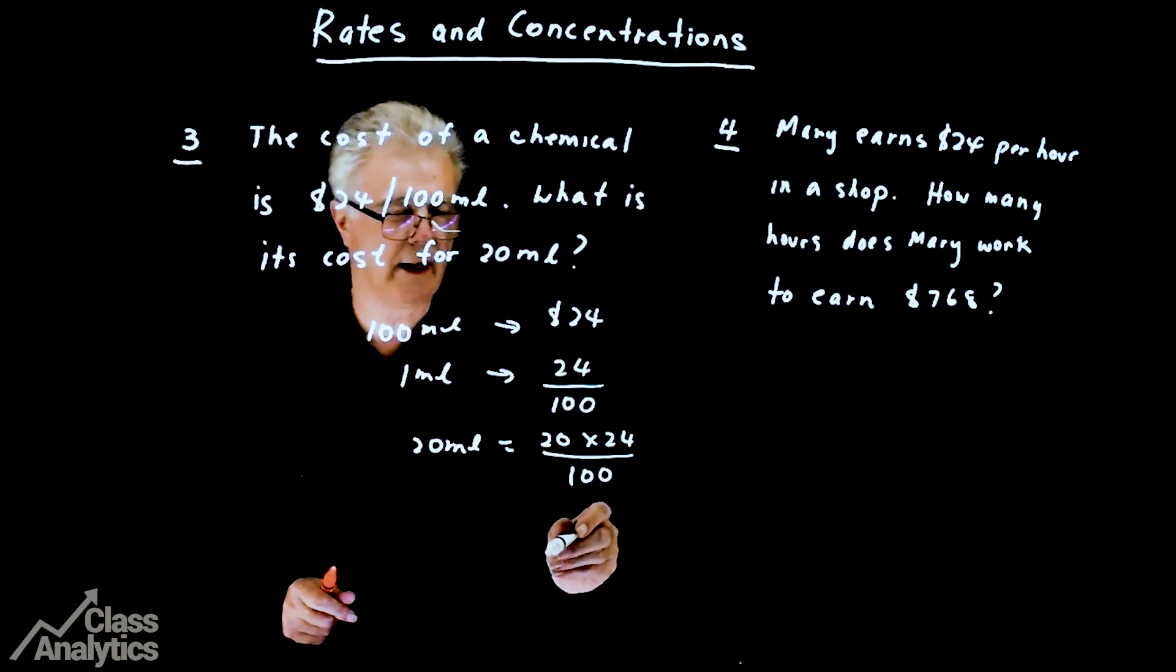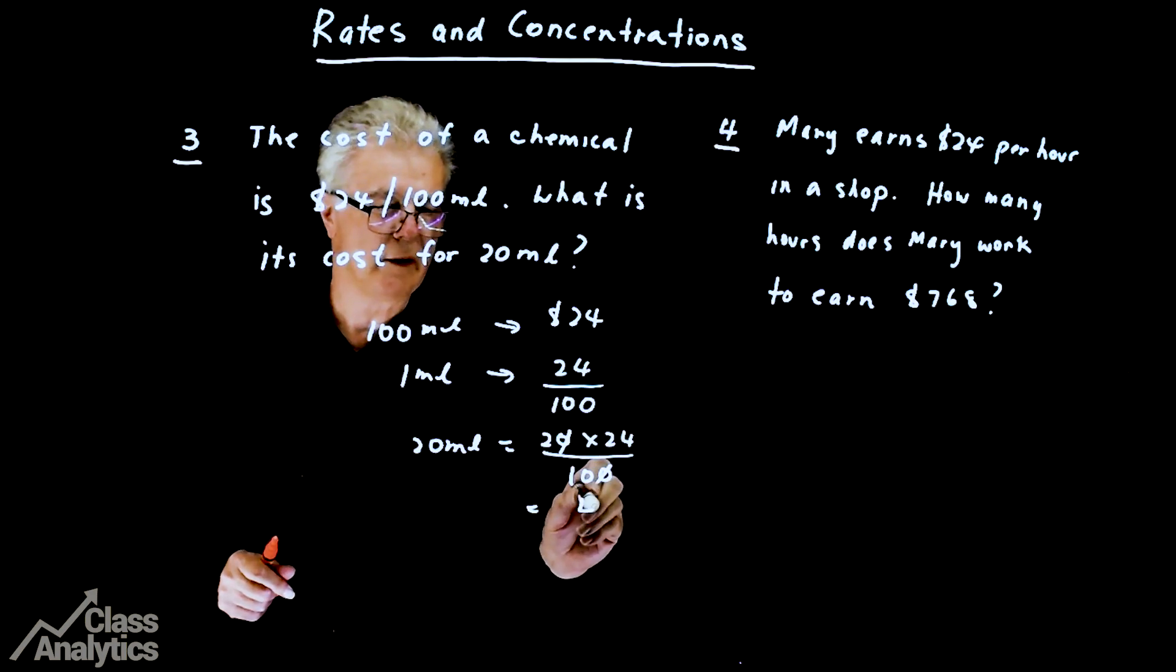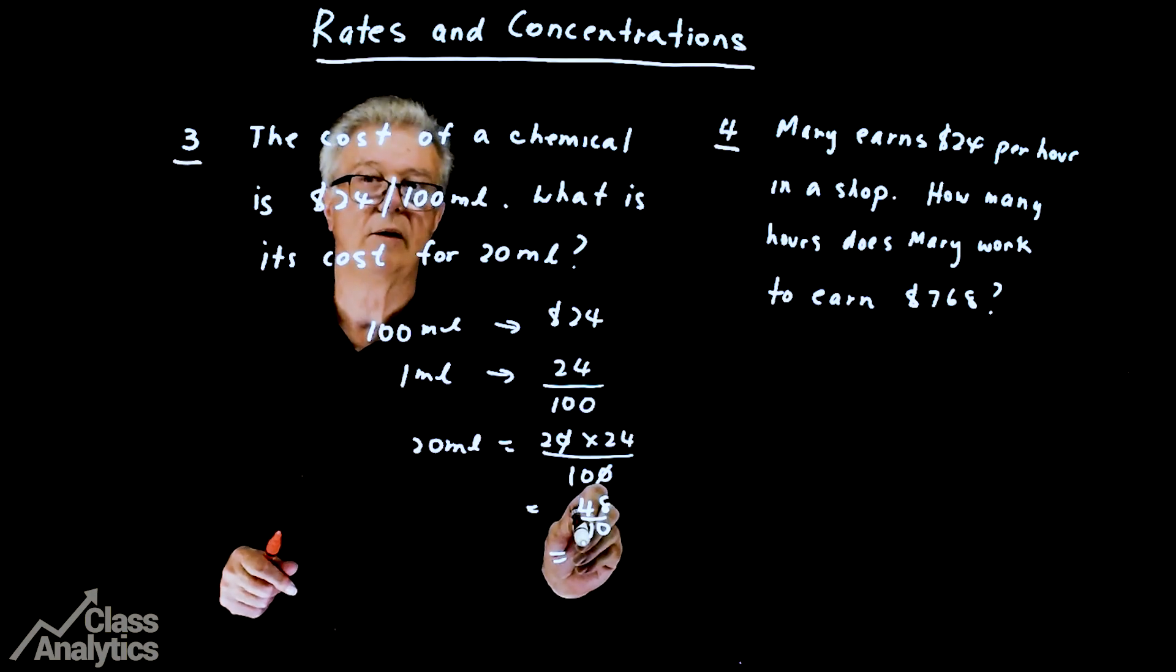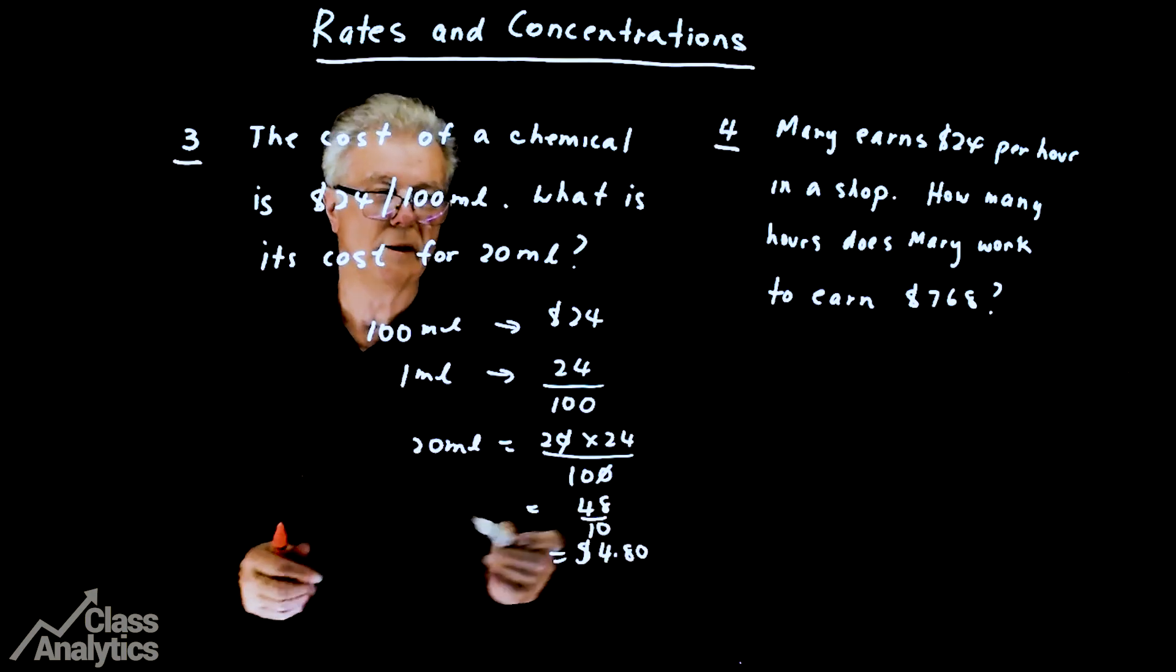If you like, we can say it's that. That's going to be, I'll knock these guys off. That's 2 times 24 is 48 over 10, which is $4.80. This is your cost.